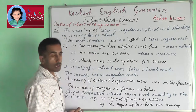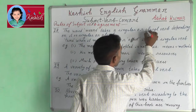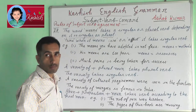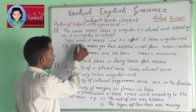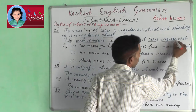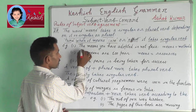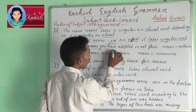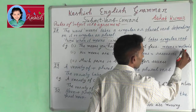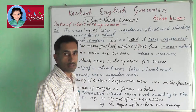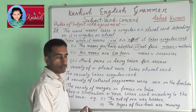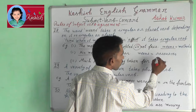Rule 28: The word 'means' takes a singular or plural verb depending on the context. For example: the means you have adopted is not fair — here 'means' equals 'methods'. His means are too poor — here 'means' equals 'resources'.